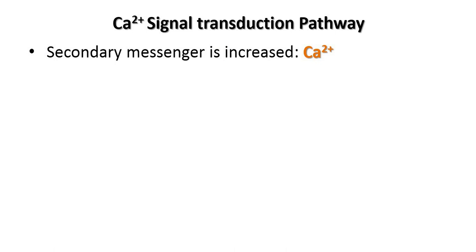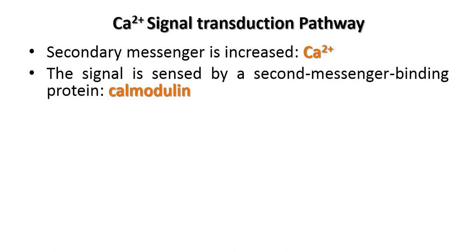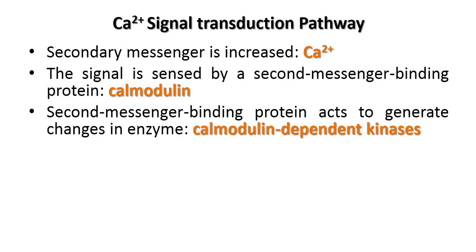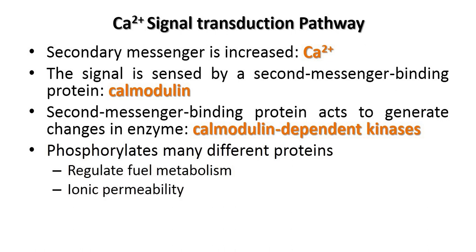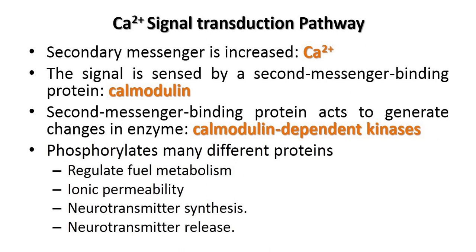In summary, the calcium signaling pathway proceeds as follows: calcium acts as a second messenger and its concentration increases. The signal is sensed by the second messenger binding protein calmodulin, which then acts to generate changes in calmodulin-dependent kinases. These kinases phosphorylate many different proteins, helping regulate fuel metabolism, ionic permeability of cells, neurotransmitter synthesis, and neurotransmitter release. That concludes the calcium signal transduction pathway.